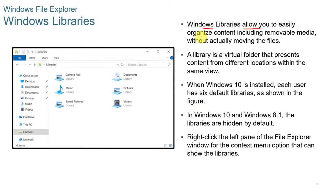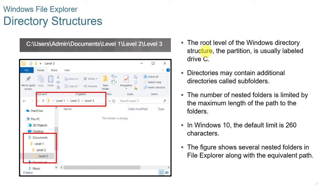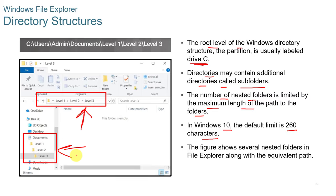Windows Libraries allow you to easily organize content, including removable media, without actually moving the files. A library is a virtual folder that presents content from different locations within the same view. When Windows 10 is installed, each user has six default libraries. In Windows 10 and Windows 8, libraries are hidden by default — right-click the left pane of File Explorer to access the context menu option to show them. The root level of the Windows directory structure is the partition, usually labeled drive C. Directories may contain subfolders, with a maximum path length of 260 characters in Windows 10.